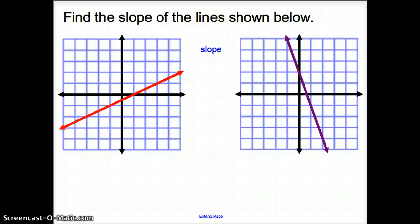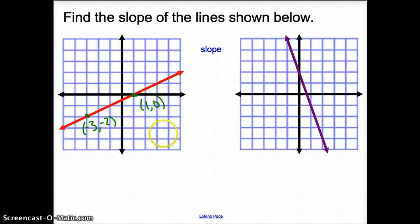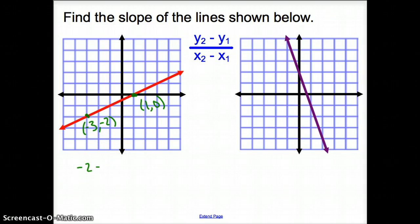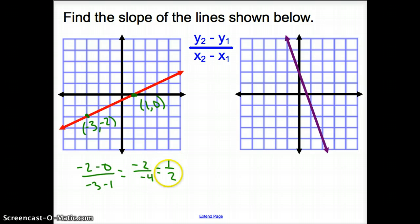Now we're asked to find the slope of a line already on the graph. One way is to find points on the line. I'm going to say I have the point negative 3, negative 2, and also the point 1, 0 on the line. Once you figure out what points the line passes through, use the slope formula. We have negative 2 minus 0 over negative 3 minus 1, which gives negative 2 over negative 4, which is positive 1/2. Notice it's going up from left to right — a positive slope.